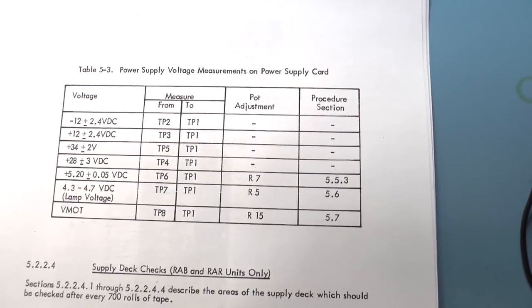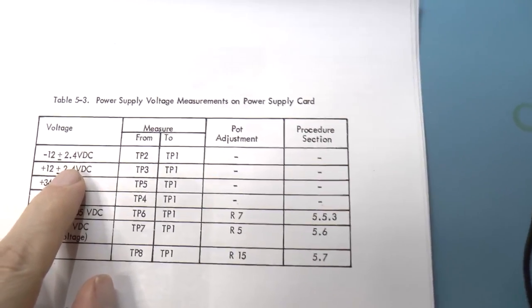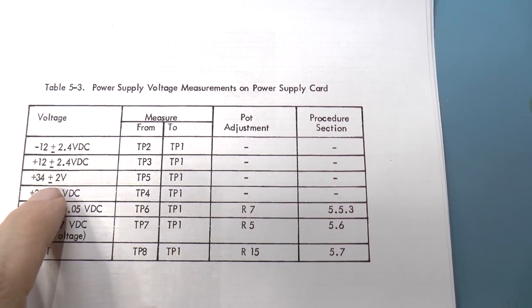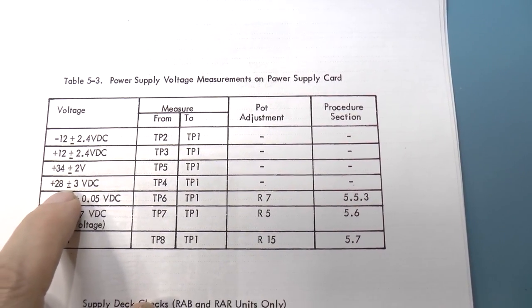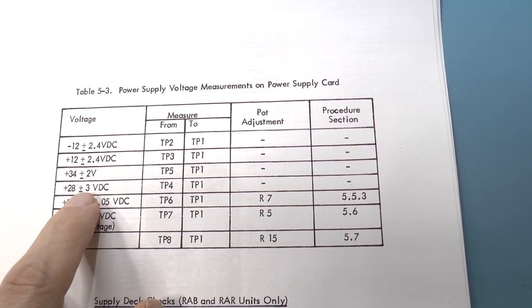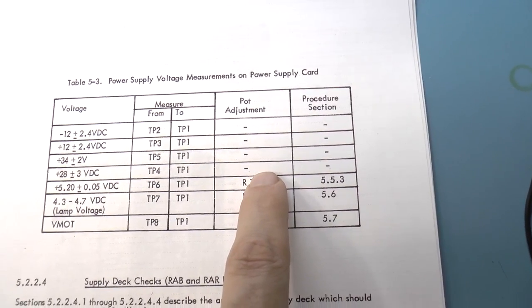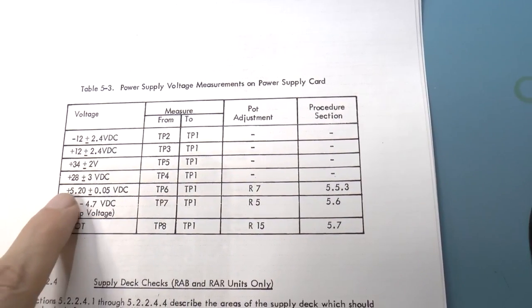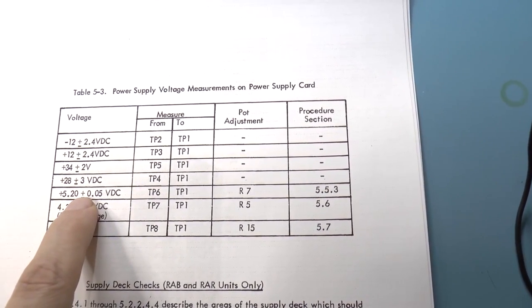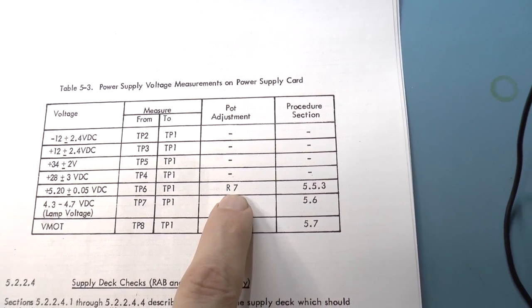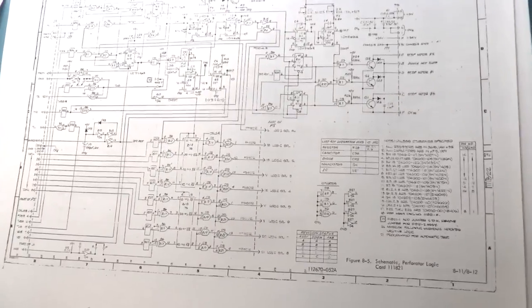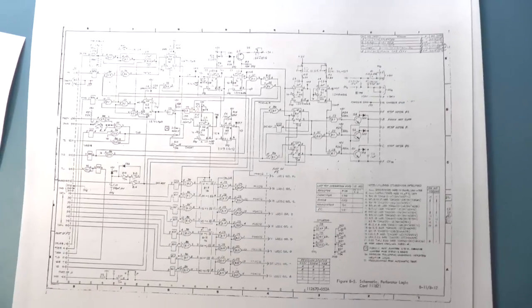And here we have some information on the power supply. So we can see that based on our previous measurements, the plus and minus 12 volts were fine, 34 volts plus or minus two volts, which is just about what I got except for the 28 plus or minus three volts. And I think I was getting also about 34 or 35 volts. So this is out of spec, unfortunately, there are no adjustments. Maybe that means that one of the circuit elements is bad. Here we also see that the five volt rail should be 5.2 plus or minus 50 millivolts. That also was out of spec. It was 5.8, but there is an adjustment, so I can definitely adjust the voltage on that.